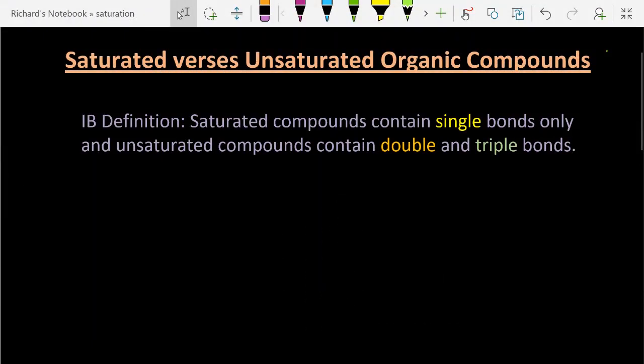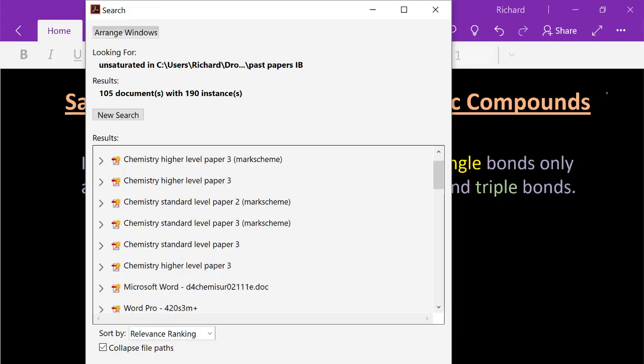According to the syllabus definition, saturated compounds contain single bonds only and unsaturated compounds contain double and triple bonds. But having looked through all 105 of those documents with 190 instances about what the IB actually believes